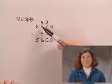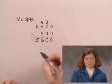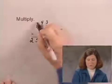Now multiply 6 times 8. 6 times 8 is 48 plus 4 is 52. Writing the 2 below and the 5 above the last 8.